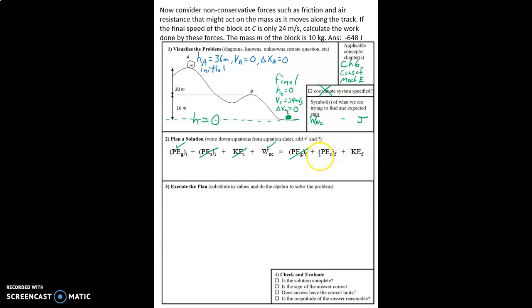So there's no gravitational potential energy, no spring potential energy because there are no springs, and there will be kinetic energy. We know it's going 24 meters per second.